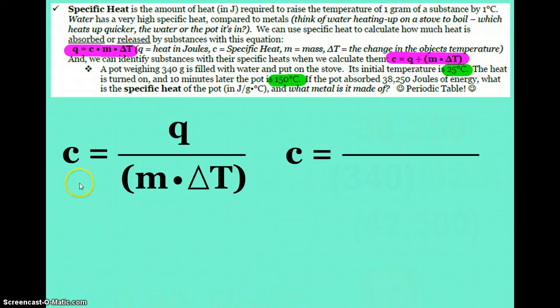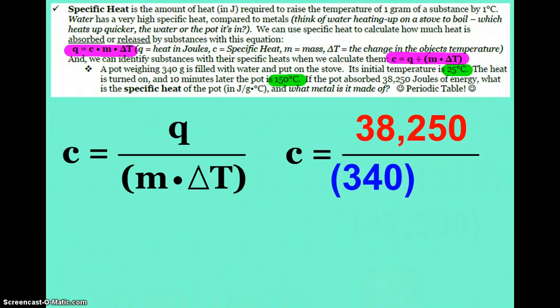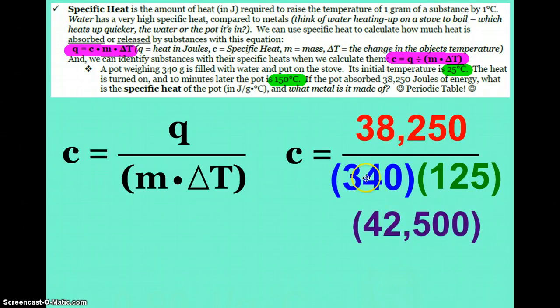So I have to place my numbers in the appropriate spot of the equation. My Q heat, 38,250. The mass of the pot is 340 grams. Delta T is the change in temperature between 150 and 25. So the difference is 125 degrees. Now you've got to make sure you do the math properly. You either have to use parentheses for your denominator on your calculator or multiply that out first. So 340 times 125 is 42,500.